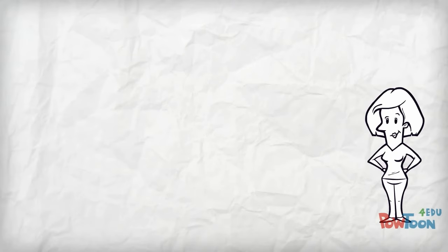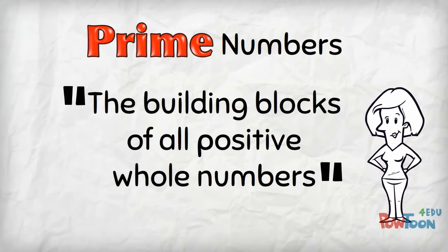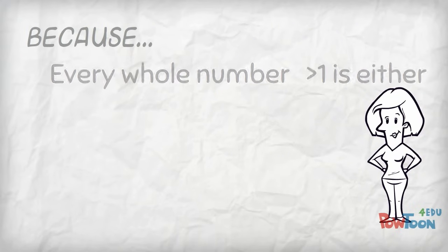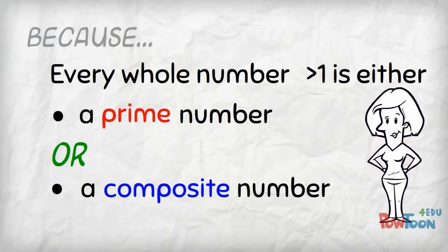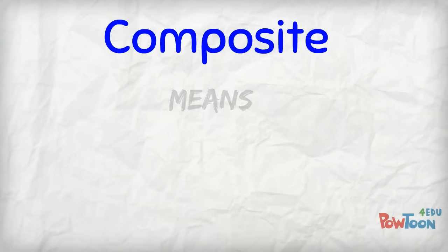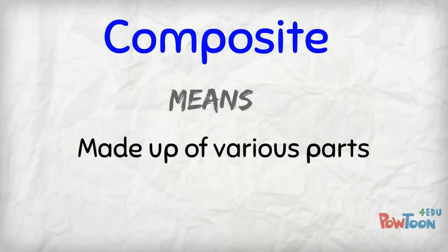Mathematicians call prime numbers the building blocks of all positive whole numbers because every whole number greater than 1 is either a prime number or a composite number. The word composite means made up of various parts.